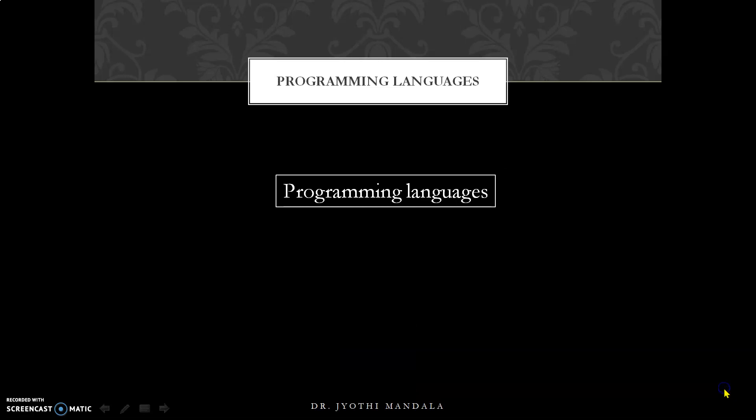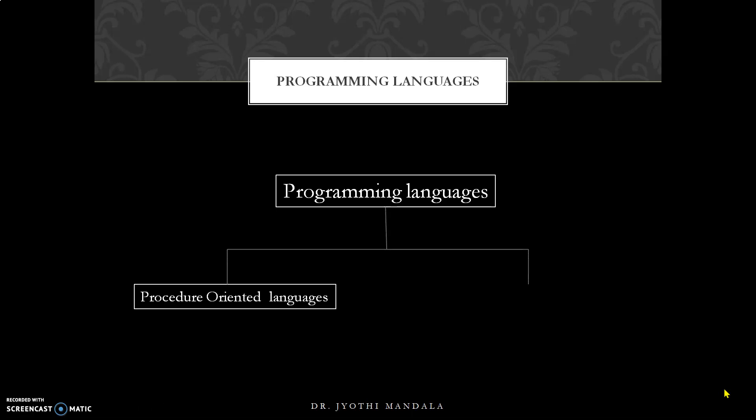In our earlier lecture we learned what an object-oriented programming language is, and as part of that we considered the Java programming language. We saw what areas Java has been used in, its history, and concluded with the installation process. Now, before proceeding further, let us highlight the differences between programming languages — specifically Procedure-Oriented Language (POP) and Object-Oriented Programming Language (OOP).